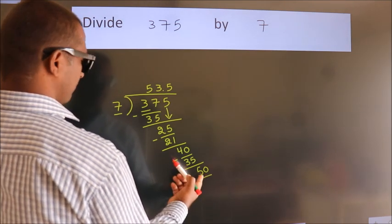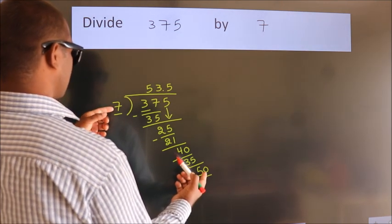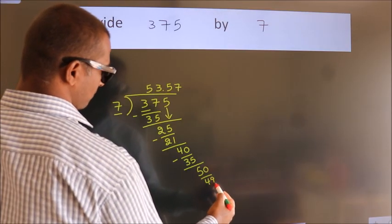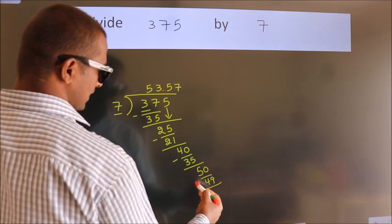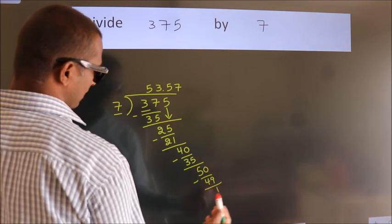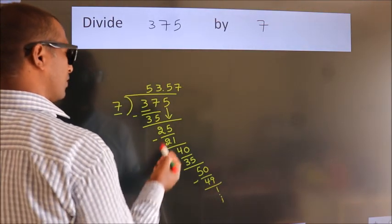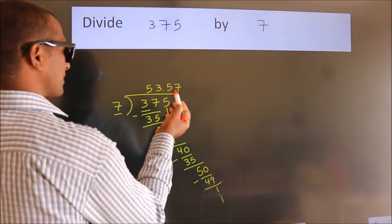A number close to 50 in the 7 table is 7 sevens, 49. Now we subtract. We get 1, and the division continues. It is enough if we do up to 2 decimal places.